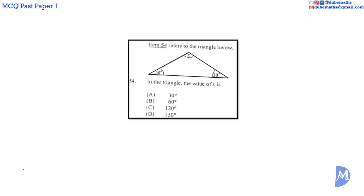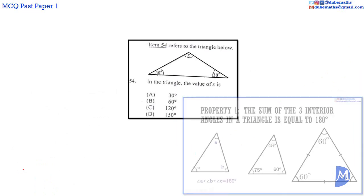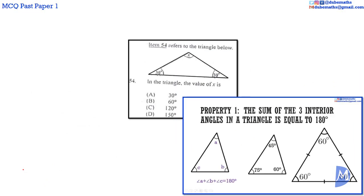Question 54. The sum of the three interior angles in a triangle is 180 degrees, or two right angles. Therefore, X is equal to 180 degrees minus 30 degrees minus 30 degrees. The answer is C.